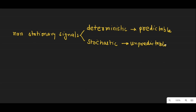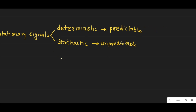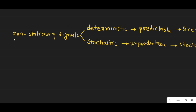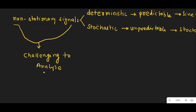Stochastic signals, on the other hand, are those whose properties change randomly over time, such as stock prices of a company, which are unpredictable over time. Non-stationary signals are more challenging to analyze and manipulate than stationary signals because their statistical properties are not constant.